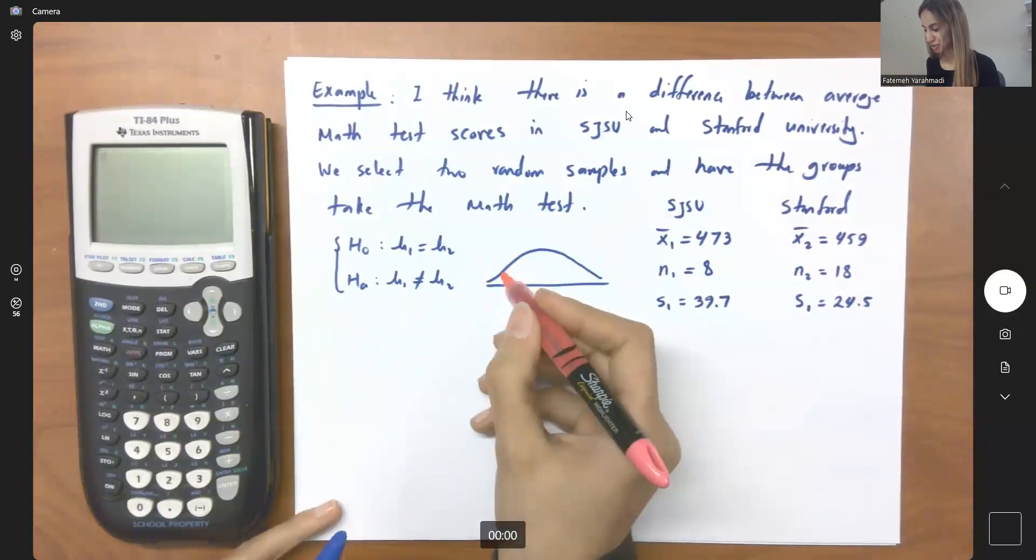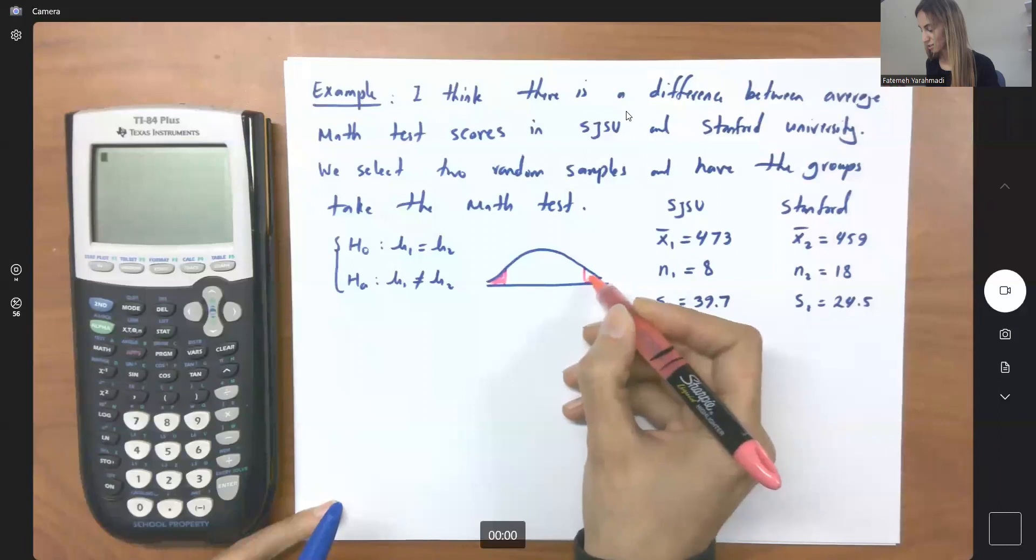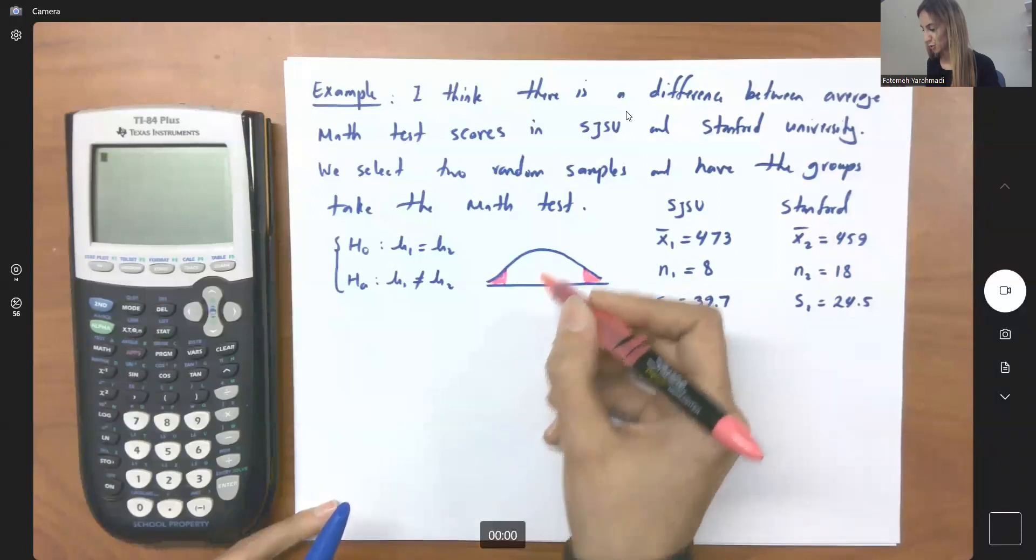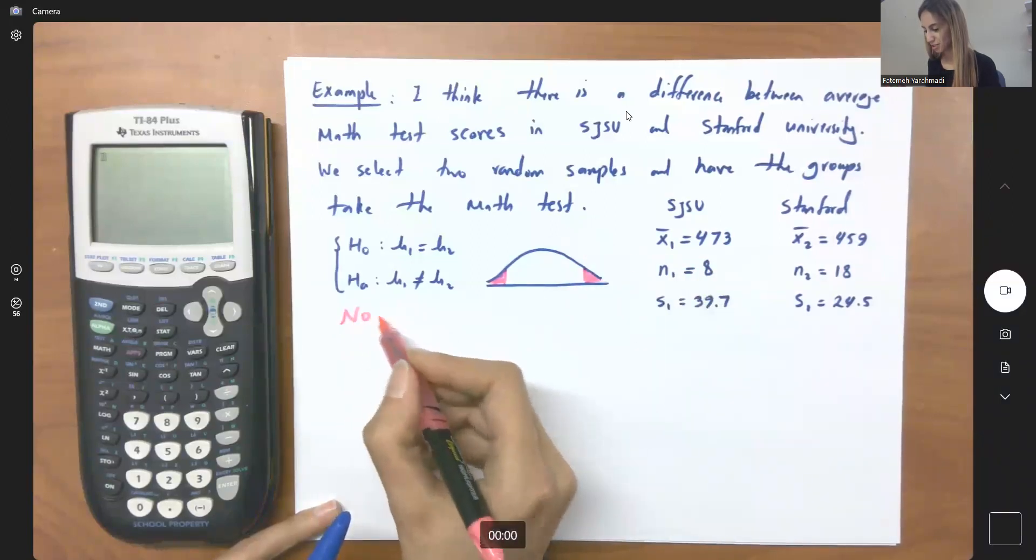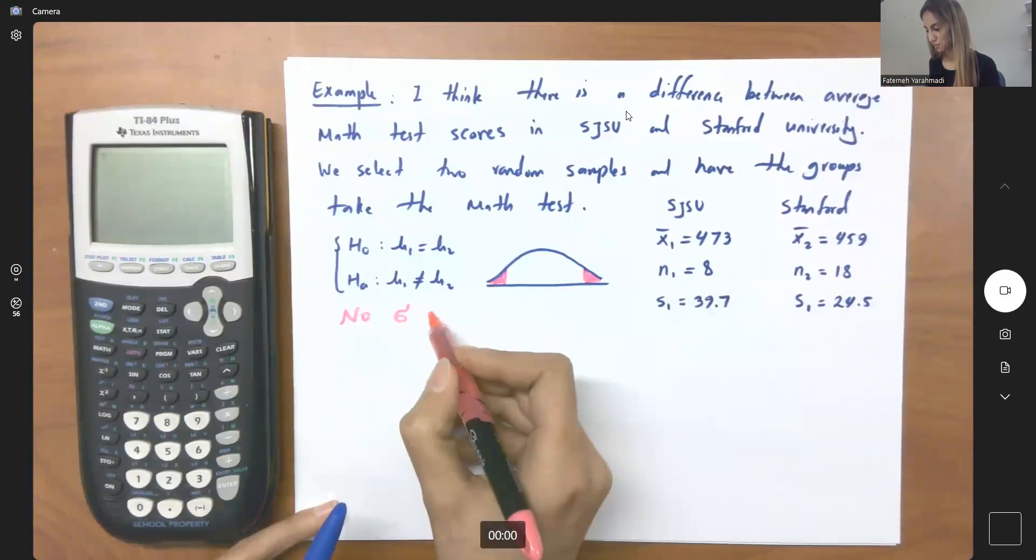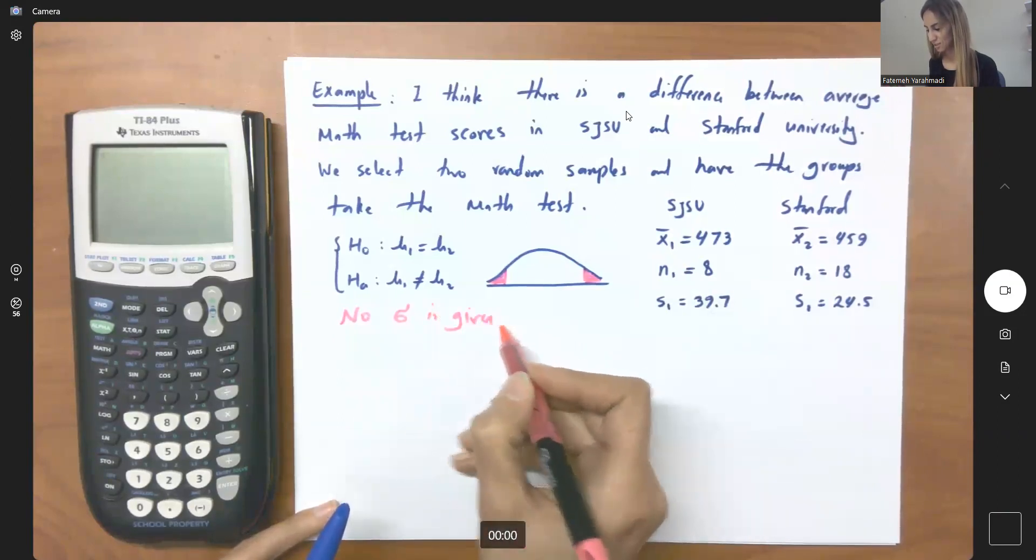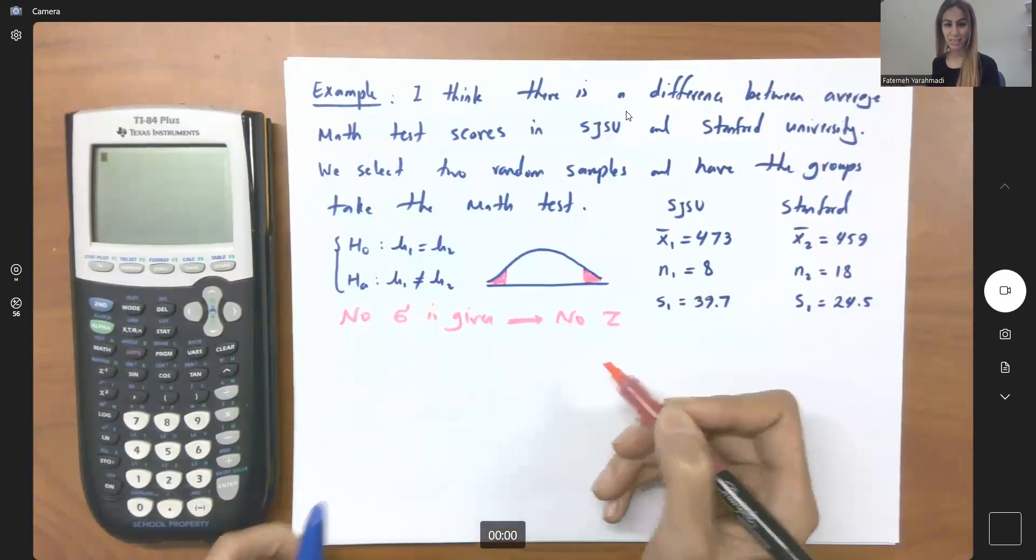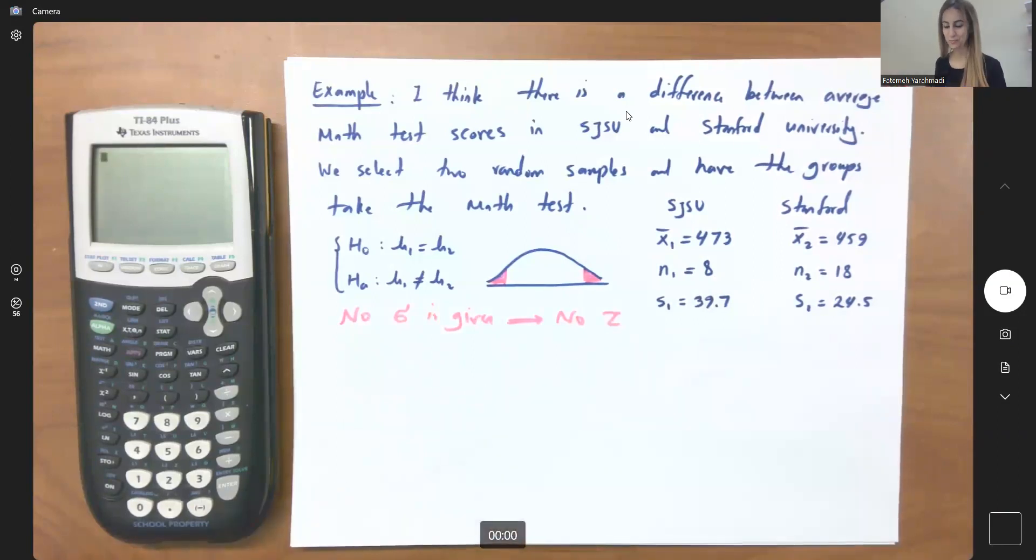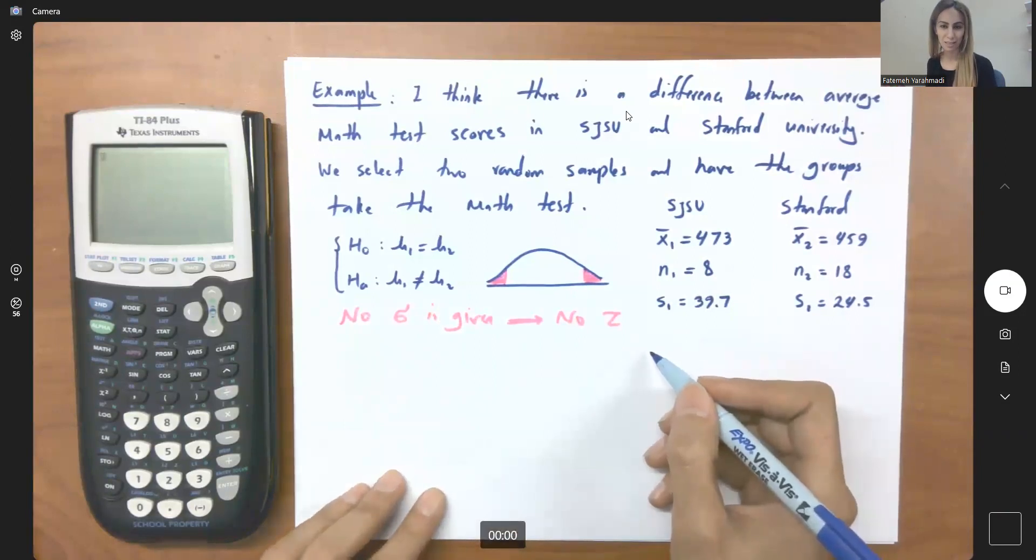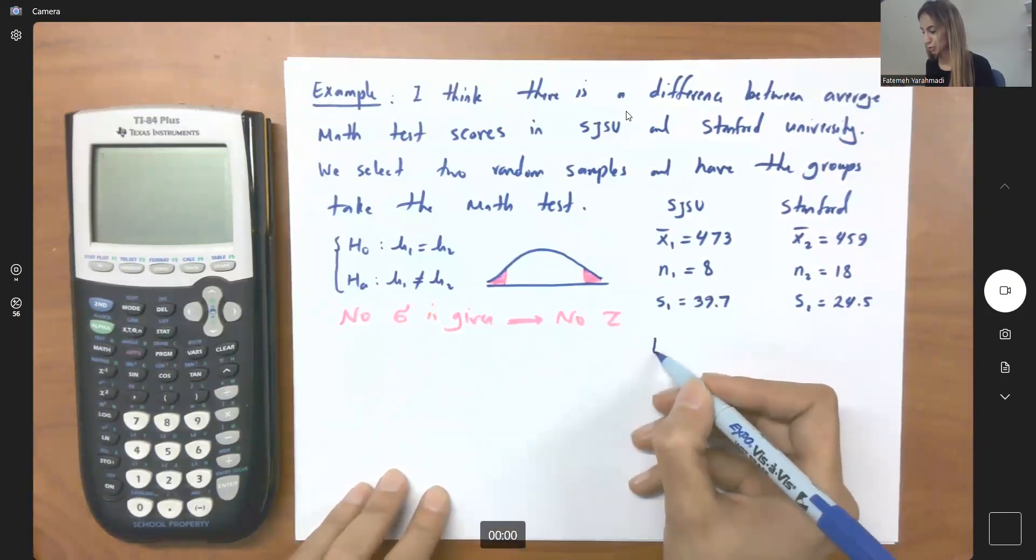So it means that you have a two-tailed test. Please pay attention here. We don't have population standard deviation. No sigma is given here. It means that no z. We cannot use z here. So we need to switch to a different standardized statistic, which is going to be your t.